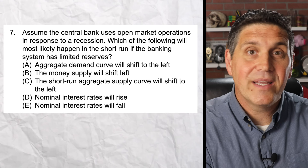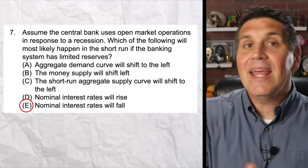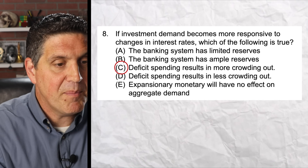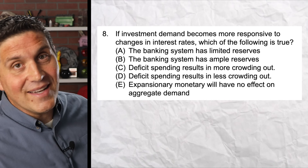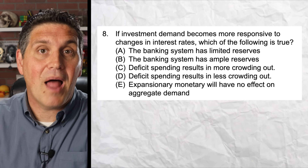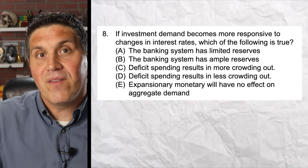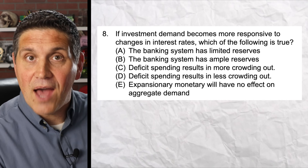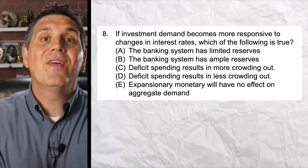Question seven focuses on monetary policy and open market operations. The right answer is E: when the central bank uses open market operations to buy bonds, that increases the money supply and decreases the nominal interest rate. Question eight focuses on the concept of crowding out — the answer is C. If investment spending becomes more responsive to a change in interest rates, there will be more crowding out from deficit spending. When the government deficit spends, it decreases the supply of loanable funds in the private sector, increasing real interest rates. The government borrows money, leaving less for private businesses, leading to higher rates and less investment. If investment is more responsive to interest rate changes, even a small rise from deficit spending leads to even less investment.